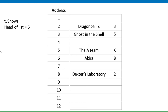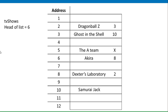This is a representation of how you can use a list to store data sequentially. My first TV show alphabetically is Akira, so the head of list points at that node, and so on down until the final node. If a new item arrives that needs to go before 'The A-Team', we put it into memory, update the previous pointer to point at our new node, and have the new node point at the one that follows it.